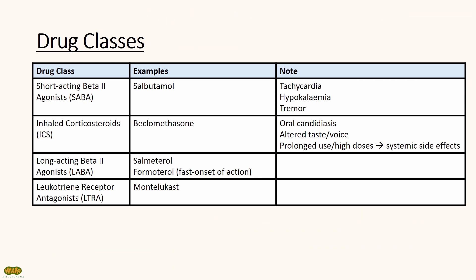These are the drug classes used in the management of chronic asthma. SABAs, like salbutamol, cause side effects such as tachycardia, tremors, and hypokalemia. This is why nebulized salbutamol can also be used in the management of hyperkalemia in an acute setting.